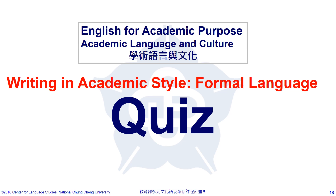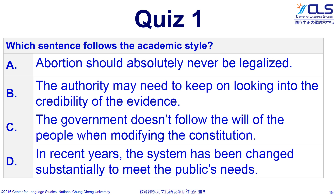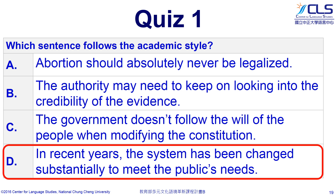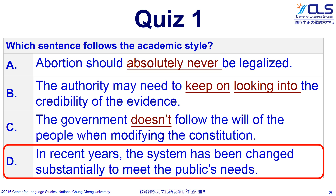Let's check how much we've learned. Which sentence follows the academic style in writing? The answer is D. It uses specific word choices like 'in recent years' to limit the scope and uses the formal word 'substantially.' Option A is too emotive with 'absolutely never.' B uses informal phrasal verbs 'keep on' and 'looking into.' C uses the contraction 'doesn't.' So the best option is D.